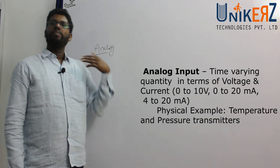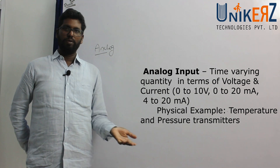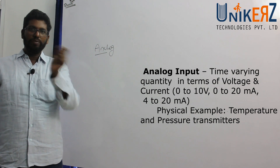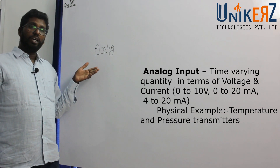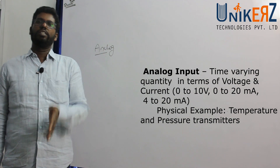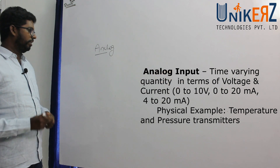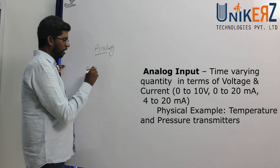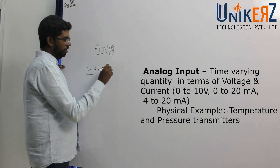Analog variables are variable inputs — they vary between 0 and a maximum value. That is the analog input. For digital input, the voltage is either 0V or 24VDC. That is the PLC digital input.